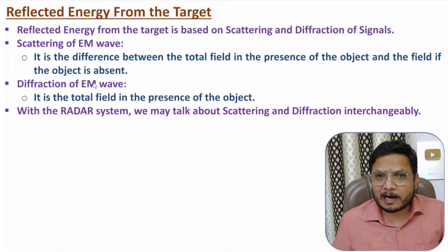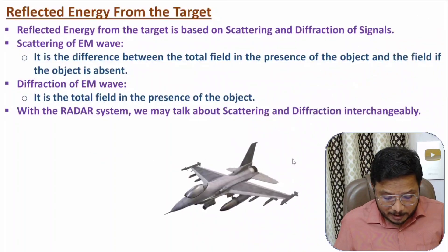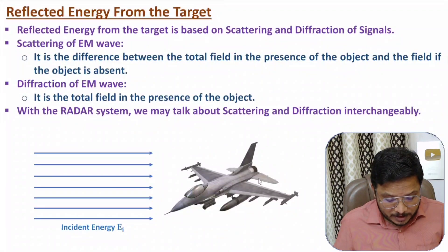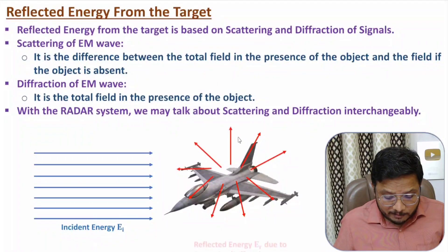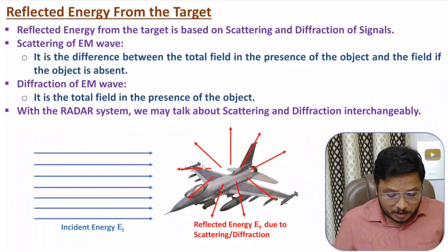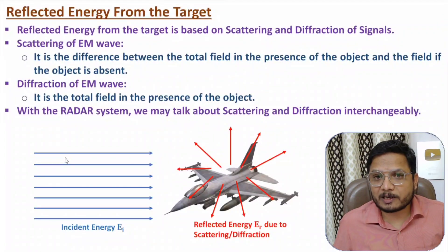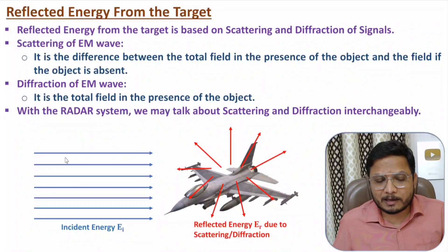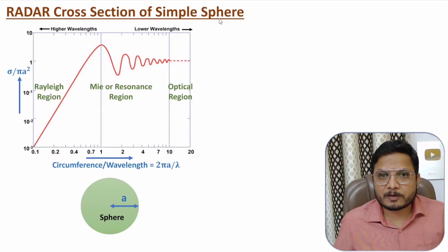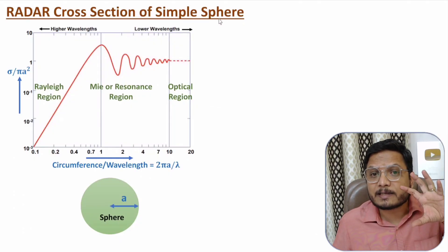Here we have one object where incident energy is happening in this direction towards the object. Because of the object, there will be reflection of energy, and this reflection of energy happens because of scattering or diffraction. Based on reflected energy towards the radar, we can identify cross section of the target. Now let us try to understand that by considering radar cross section for a simple sphere.